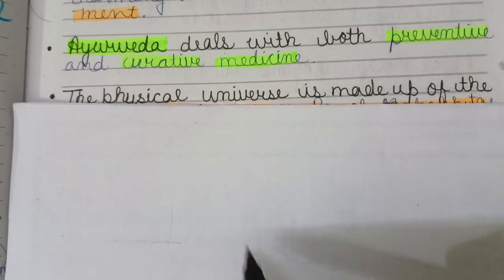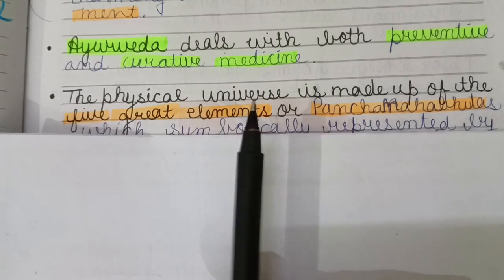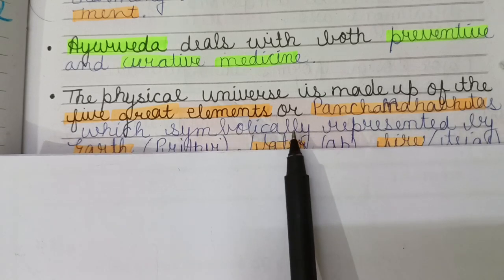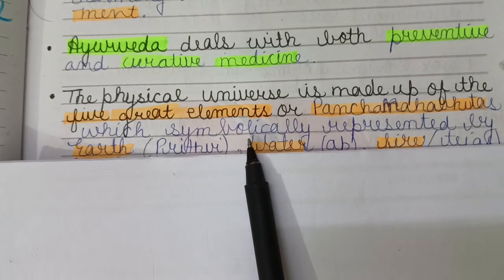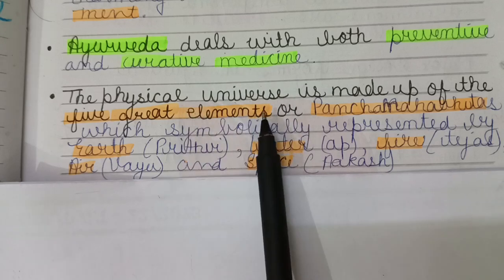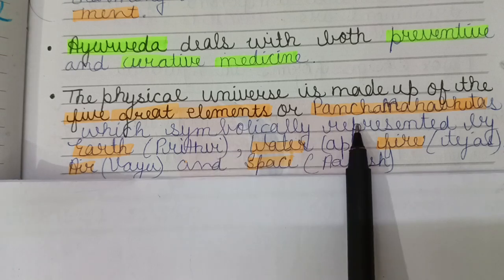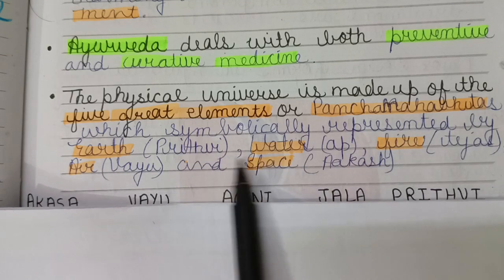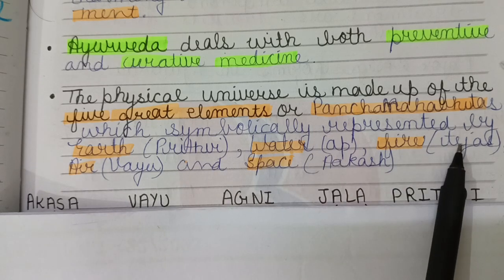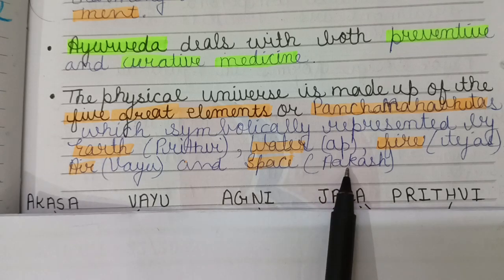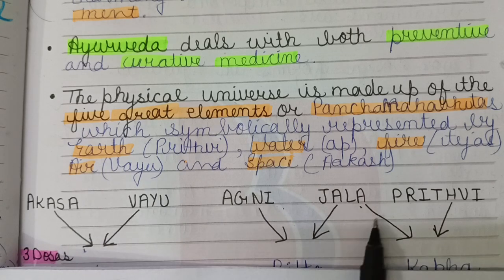If you have a disease, Ayurveda provides curative medicine. The physical universe is made up of five great elements known as Panch Mahabhutas. Everything in this universe is made up of these five great elements, which are symbolically represented by Prithvi (earth), Jal (water), Tejas or Agni (fire), Vayu (air), and Akas (space).